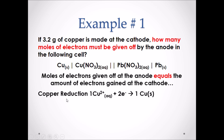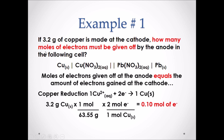Using our cell notation we can see that copper two plus ions will form copper solid. To balance this half reaction we need to add two electrons to the reactant side, representing the gaining of electrons. We can then take the 3.2 grams of copper and divide it by the molar mass of copper, resulting in moles of copper. We then use the molar ratio of two over one to convert to moles of electrons. The final answer is 0.10 moles of electrons given off at the anode.